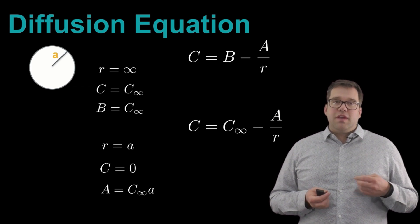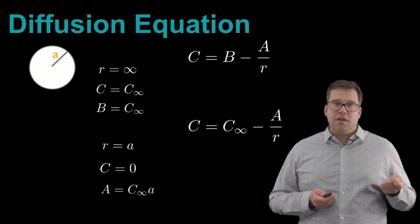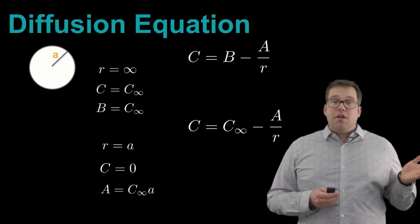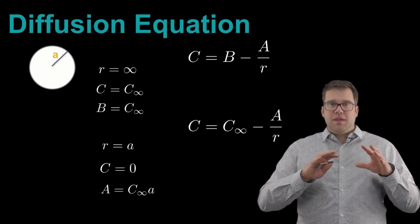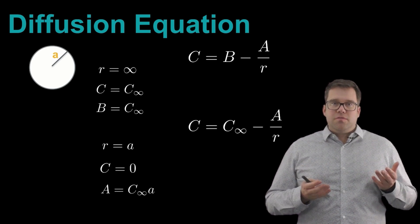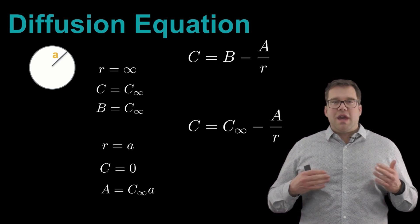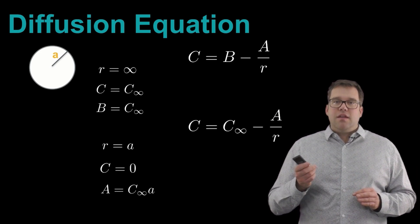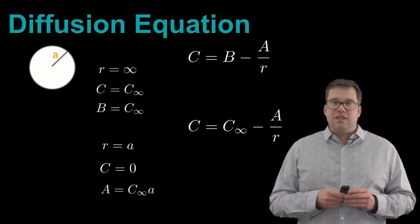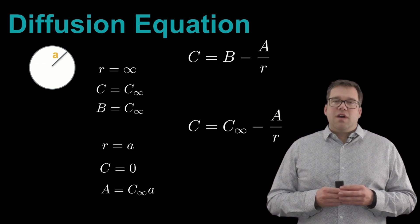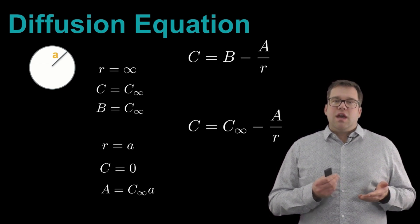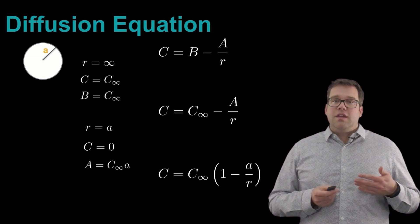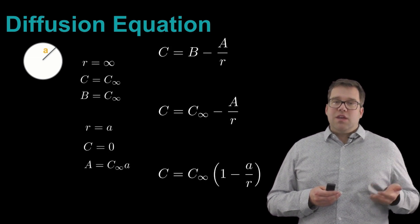And now to solve for A, we think about what the concentration is at the surface of the sphere of the cell. And if we define the cell's radius to be a, then we can say that at r equals a, C equals zero. So this is assuming that at the surface the cell is consuming all of the concentration that's there. This is really a maximum flux condition given some background concentration. And if we set r equal to a in this middle equation, C equals C infinity minus big A over r, we then find that big A equals C infinity times the radius of the sphere. Putting that all together, we now have the concentration field around a cell is C equals C infinity times one minus a over r.